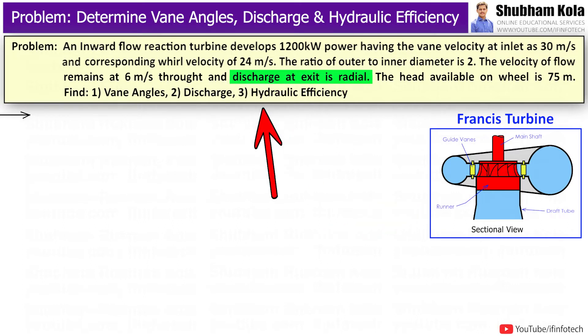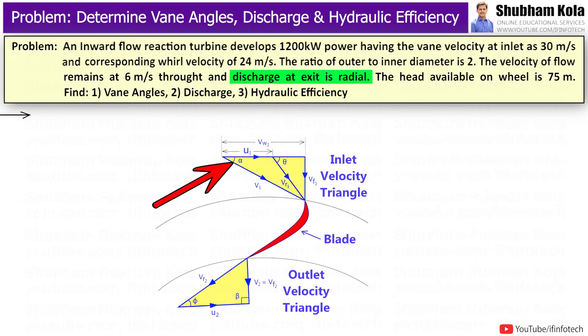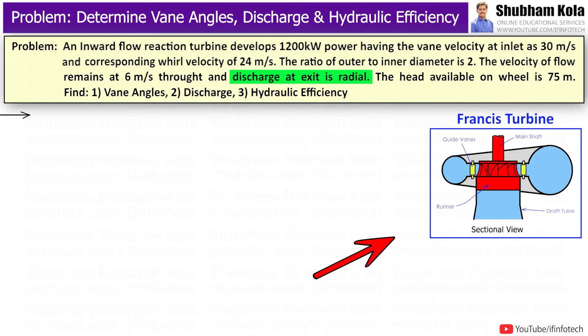In this turbine, they have mentioned that discharge at exit is radial. It means at outlet of inward flow reaction turbine, the water discharge is radial, which means the type of turbine is Francis turbine. Now, to solve this problem, let's write down the given data.